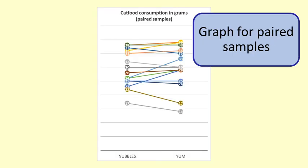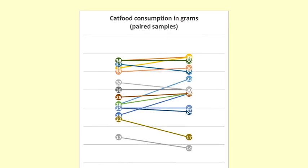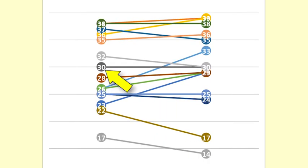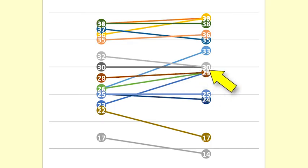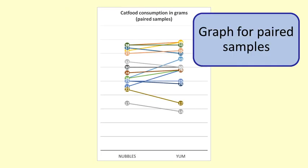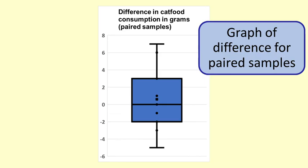For paired data we can make an arrow plot showing the paired result — this one was made in Excel. Each line represents one cat. A horizontal line means that it ate the same amount of each cat food. These plots are only useful for small sets of data. Rather than use the arrow plot, we can calculate the difference for each observation — in this case a cat — and plot those differences using a box-and-whisker plot.